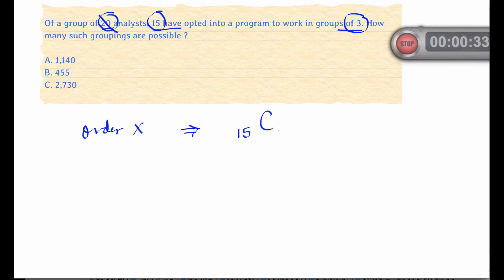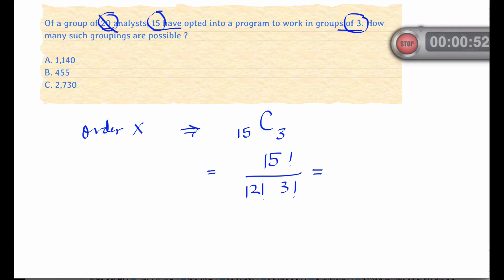So this is a combination problem. This becomes 15C3, which in turn becomes 15 factorial divided by (15 minus 3) factorial times 3 factorial. We enter that into our calculator and we get the answer 455. So answer B is the correct option.